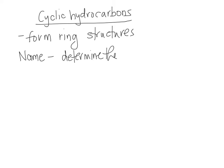Cyclic hydrocarbons are hydrocarbons that form ring structures rather than straight chains. When you name them, you determine the number of carbons in the ring, and that becomes your root.